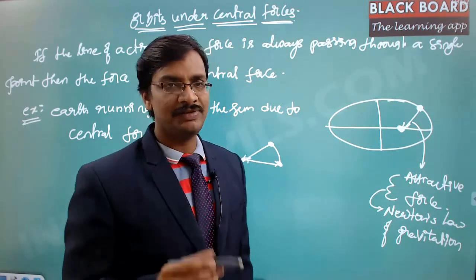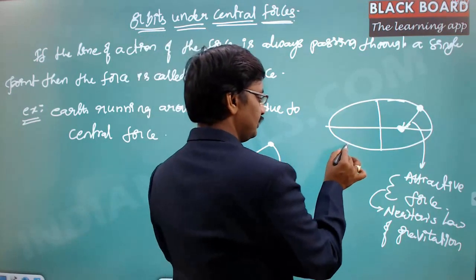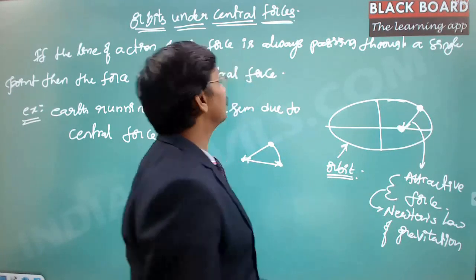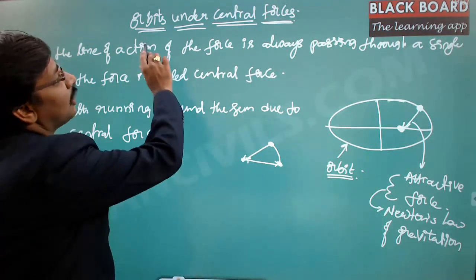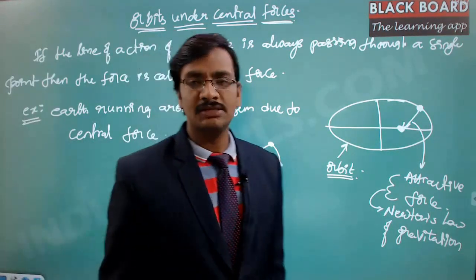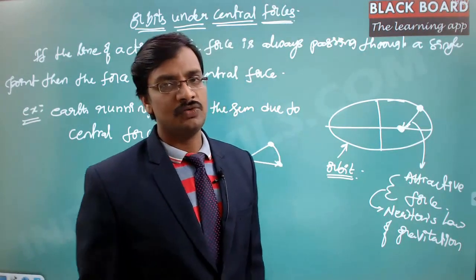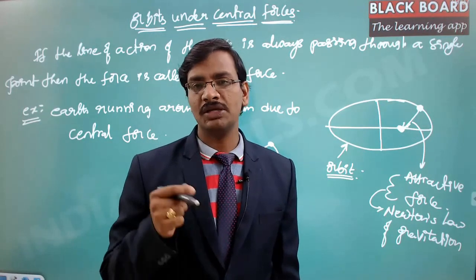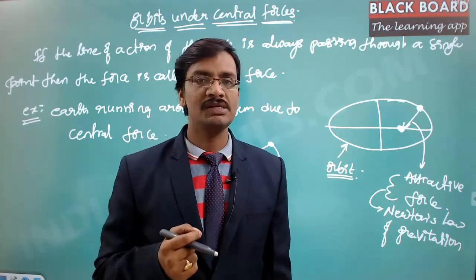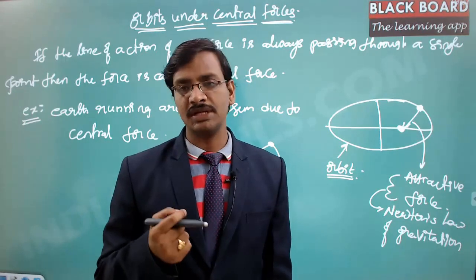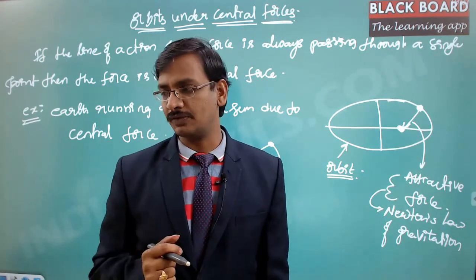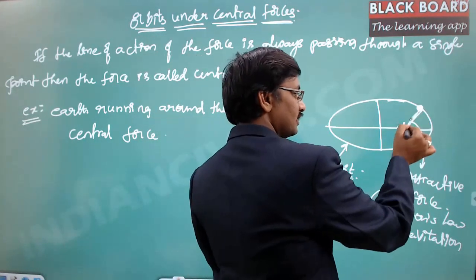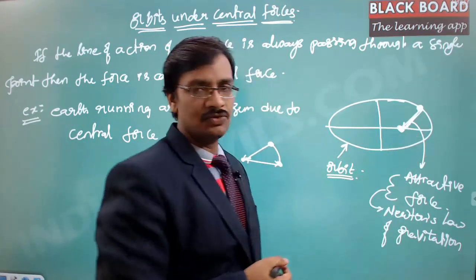The moving objects specifically in an orbit — this is an orbit. The basic concept of central force is: orbits under central forces means if there is a central force, there will always be a kind of rotation or movement. It won't stay at a single point. The central force is due to Newton's law of gravitation — there is an attraction force between the two bodies.